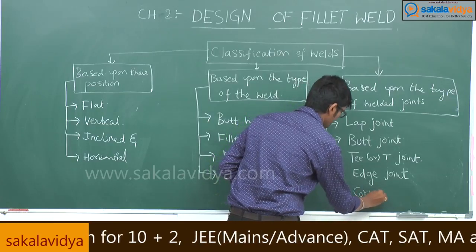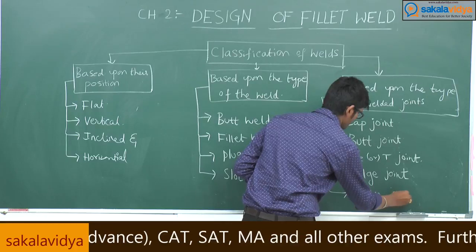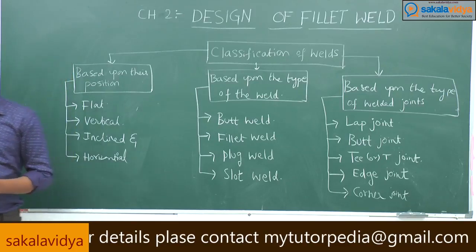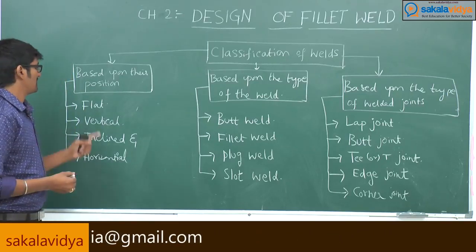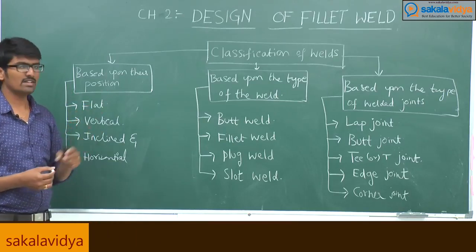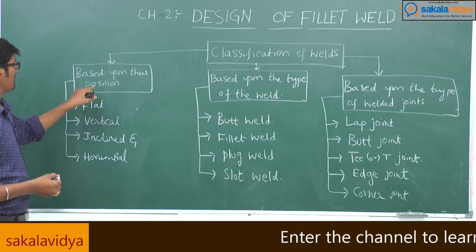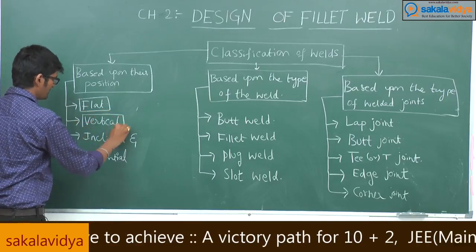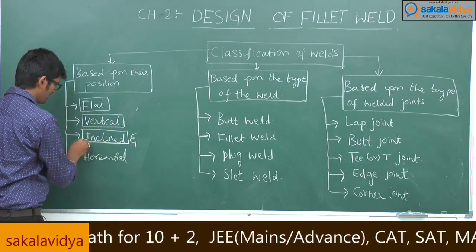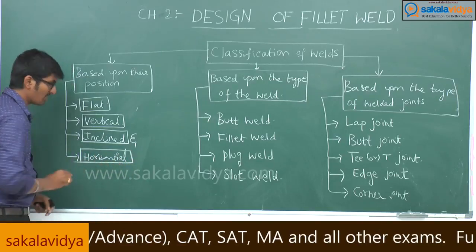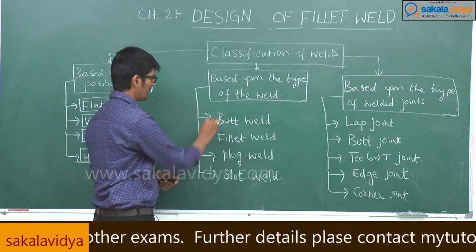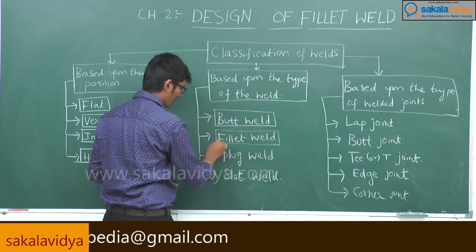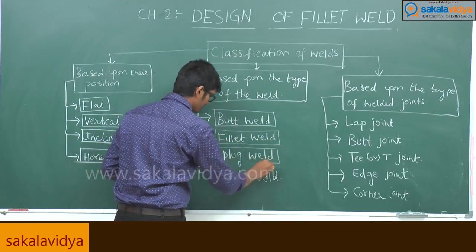So to summarize the classification: based upon position — flat, vertical, inclined, and horizontal. Based upon the type of weld — butt weld, fillet weld, plug weld, and slot weld. Based upon the type of welded joints — lap joint, butt joint, T joint, edge joint, and corner joint.